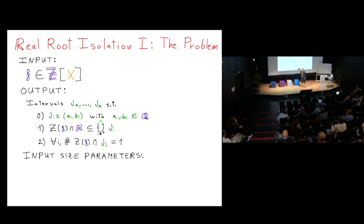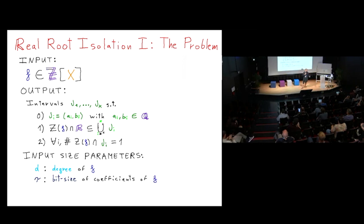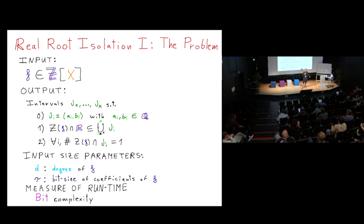The input size parameters for the polynomial are two: one is the degree, and the other is the bit size of the coefficients. Tau is essentially the maximum bit size of the coefficients. The complexity measure we use is bit complexity — the number of bit operations performed.